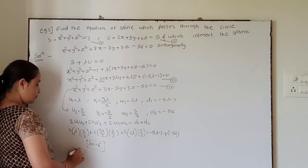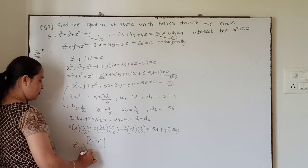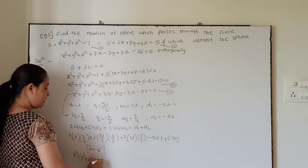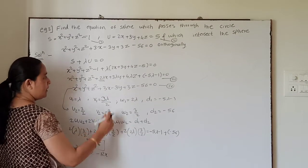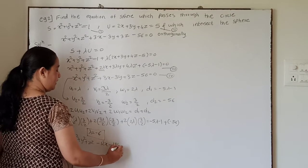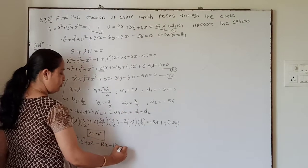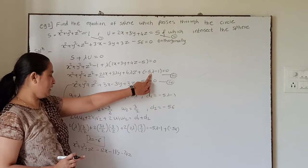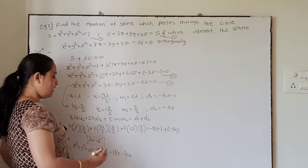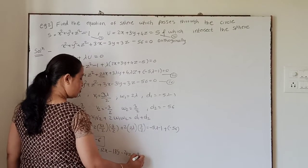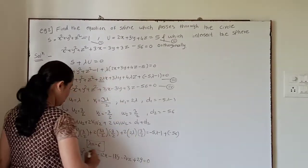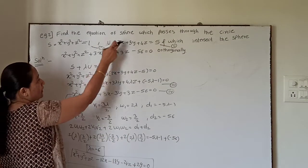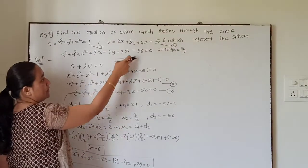Substituting λ = −6 into equation 3, the required equation of sphere is x² + y² + z² − 12x − 18y − 24z + 29 = 0. This is the required equation of the sphere which passes through the given circle and intersects the other sphere orthogonally.